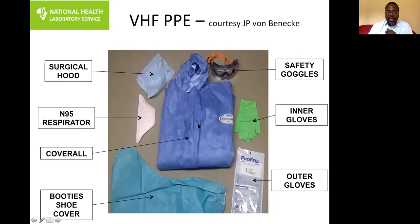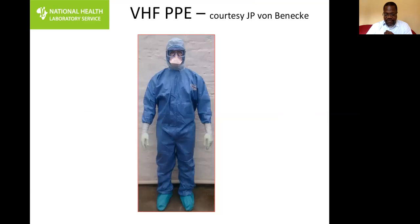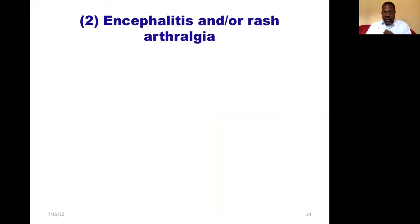In healthcare settings when dealing with viral hemorrhagic fevers, we need a coverall, surgical hood, N95 respirators, booties, two pairs of gloves — inner and outer — and safety goggles. That is how we look when we go to manage a patient infected with viral hemorrhagic fever.